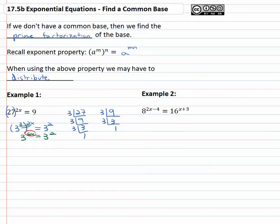With the common base, the exponents must be equal. 6x must equal 2. Quickly solve by dividing by 6, and we find out x is equal to the reduced fraction, one-third. Let's try another example.